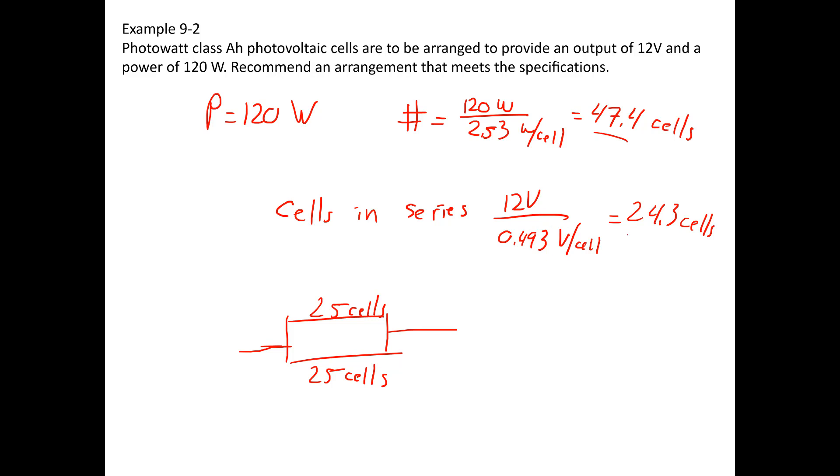So if I took 25 in series, and I have 2 of those in parallel with each other, that gives me my 50 cells, a little more power than 120 watts, but at least I get the minimum of 120, and I get a little more than that based on the fact that I have a total of 50 cells, and they're arranged as two sets of 25 cells in parallel.